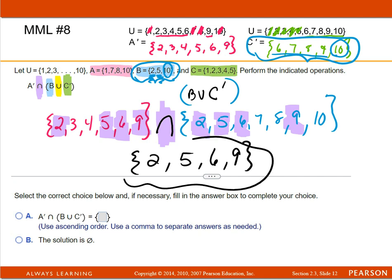And so remember in my math lab, they've already provided those braces for you. So just type 2, 5, 6, 9. And that is number 8.